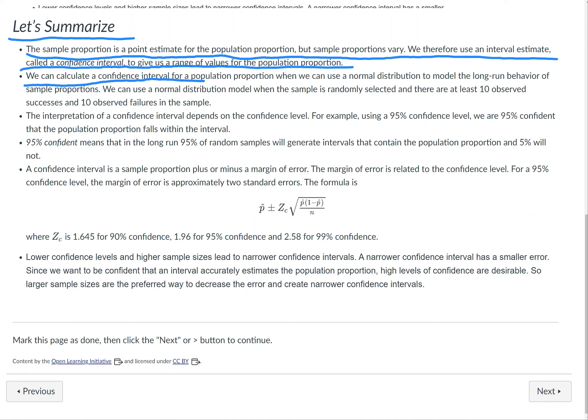We can calculate a confidence interval for a population proportion when we can use a normal distribution to model the long-run behavior of sample proportions. We can use a normal distribution model when the sample is randomly selected and there are at least 10 observed successes and 10 observed failures in the sample.